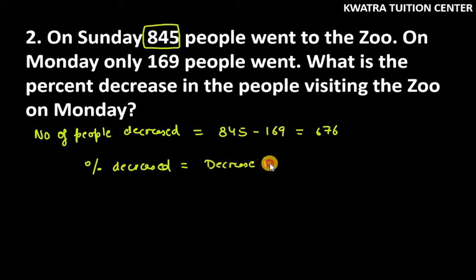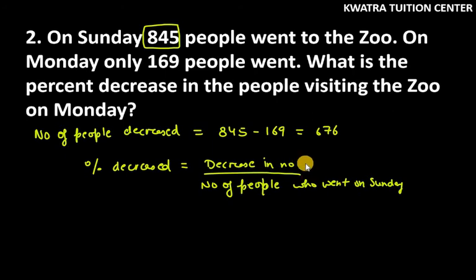So this will be decrease in number over original number. Number of people who went on Sunday. A percentage is this, so the formula will be into hundred.